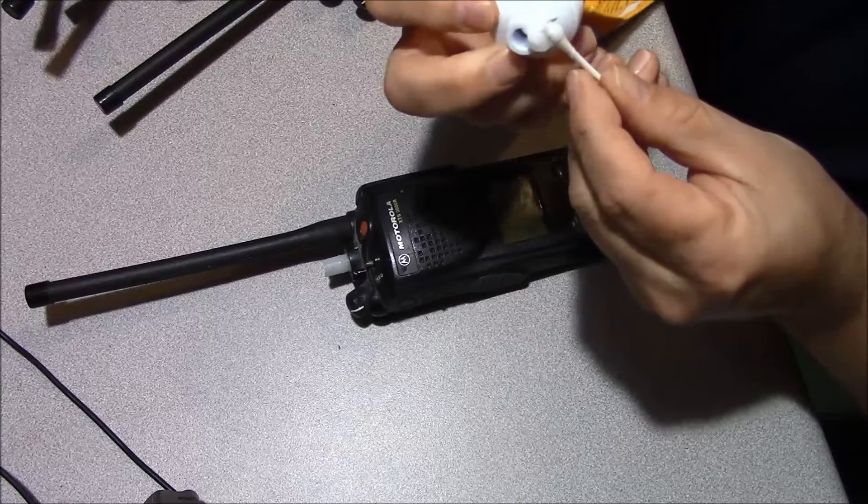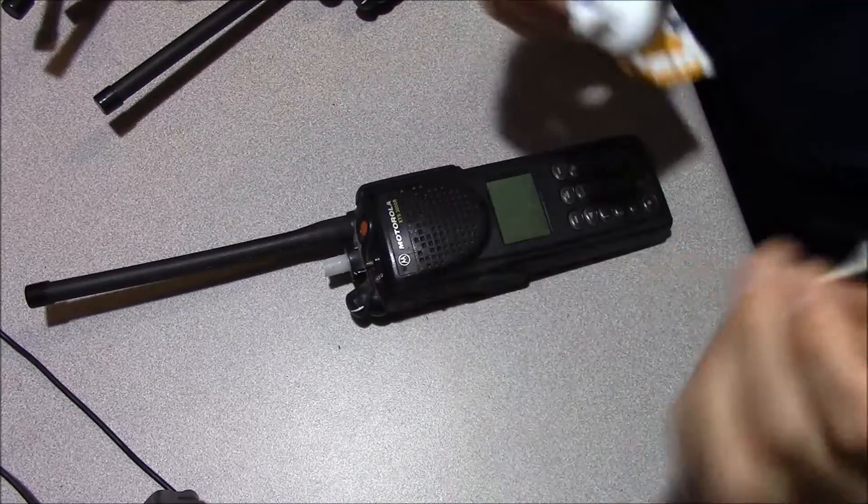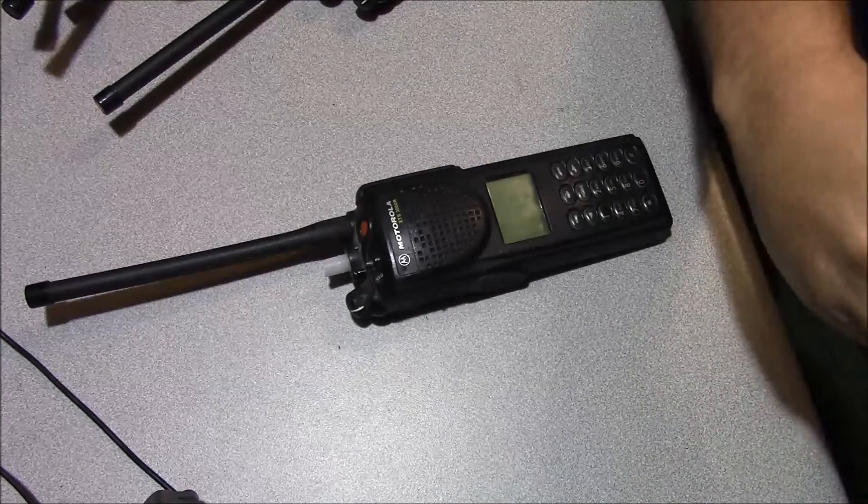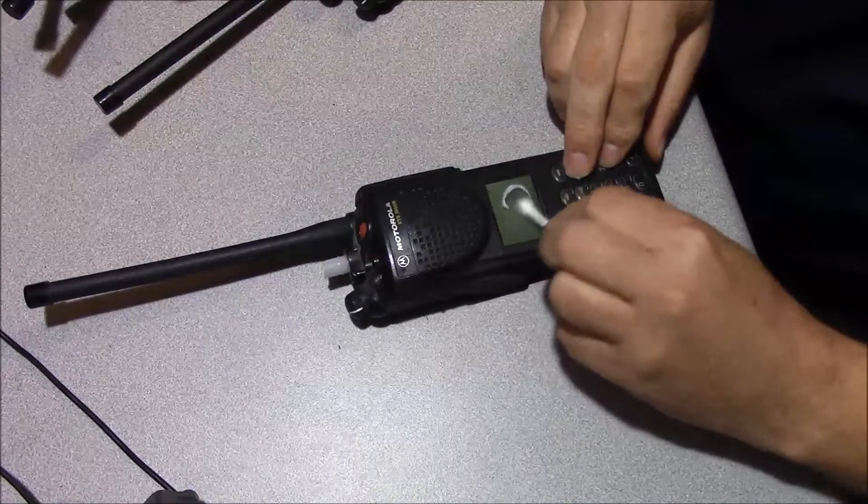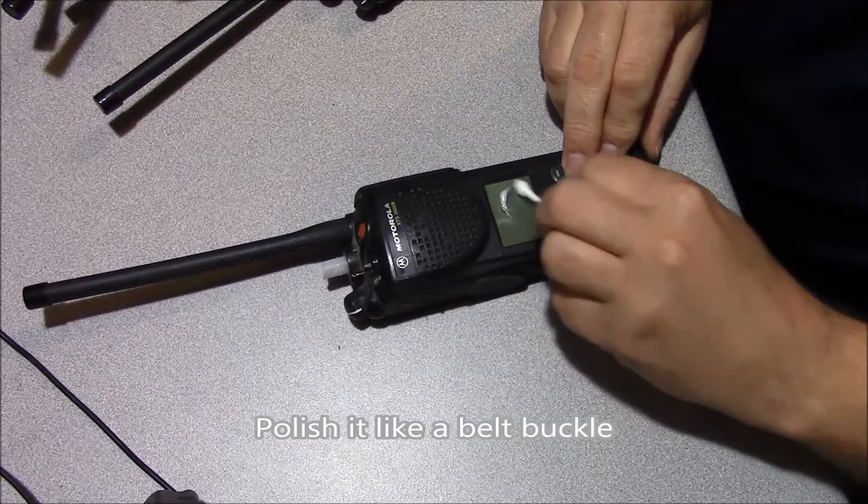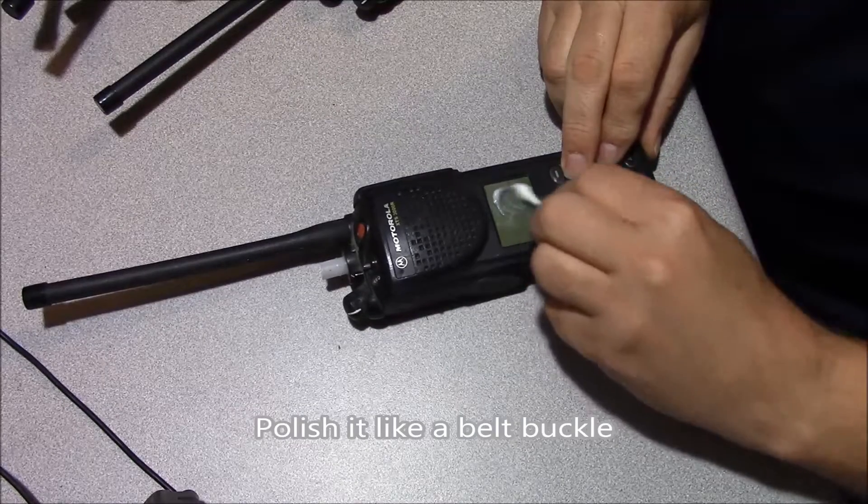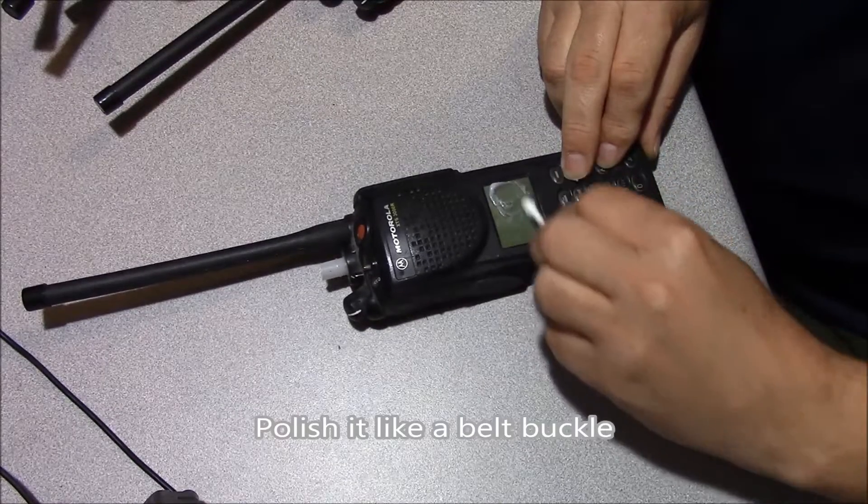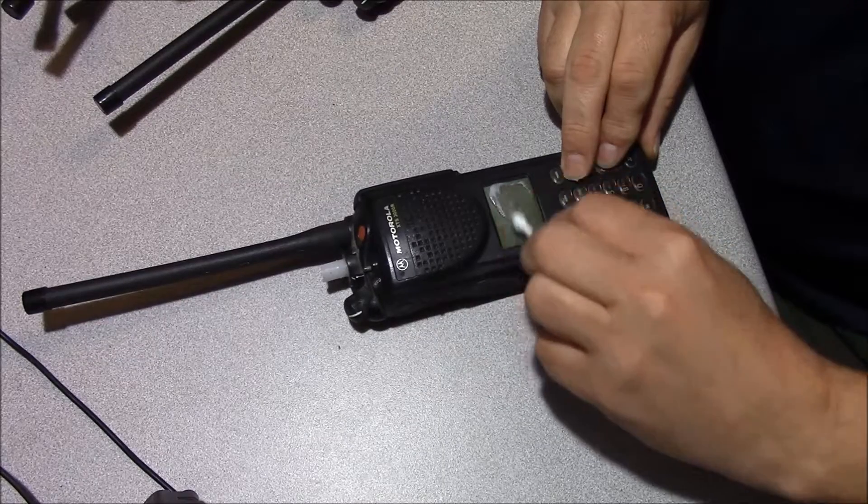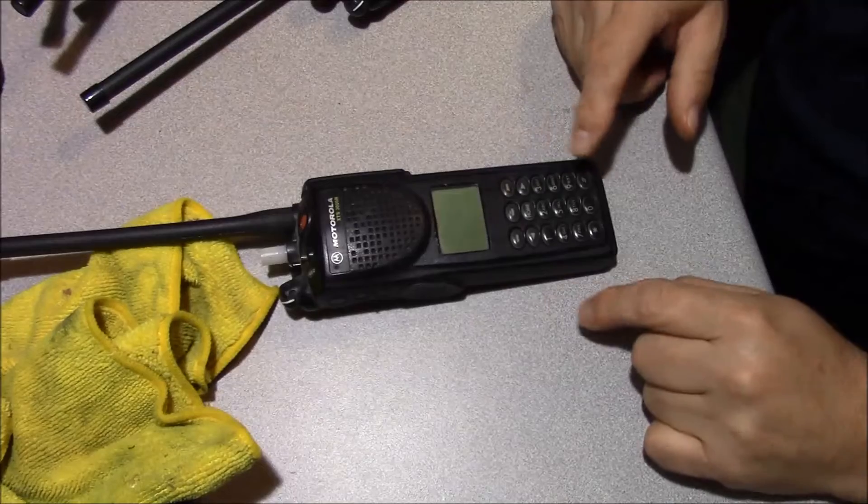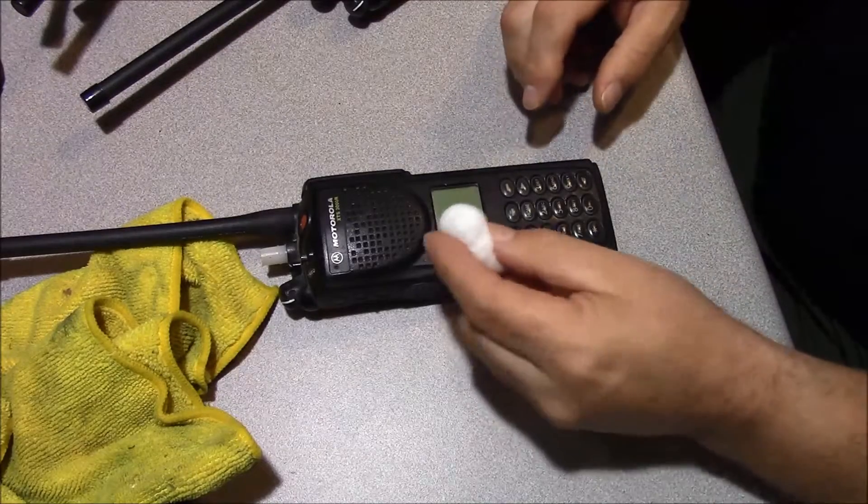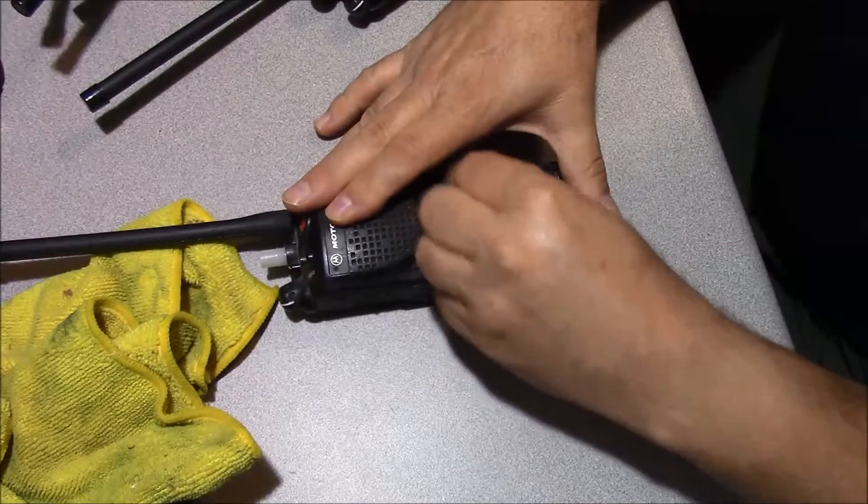You just put a little bit on an applicator and rub it on the display. It's got a mild abrasive action. Evenly spread it. Once you've spread your toothpaste, just take a cotton ball and buff it off.